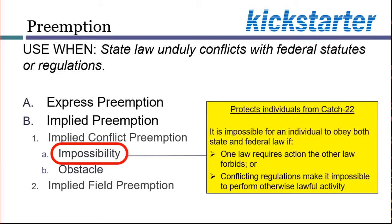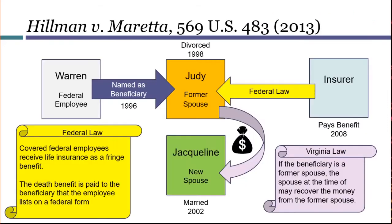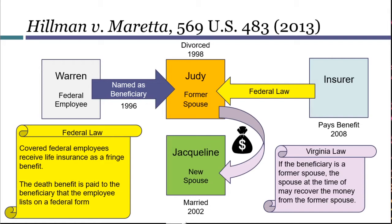Once again, people who obey one law are, by definition, violating the other. In Hillman, let's consider each individual to see whether they are placed in an impossible situation. Start with the insurance company — there's really no impossibility here. The insurer can follow federal law by sending the money to Judy, and it doesn't violate state law when it does this, because the state law says nothing about the insurance company. There's no impossibility for Judy either. Federal law doesn't require her to do anything in particular. Judy will be unhappy if the state law takes the money away from her, but that doesn't mean Judy is being forced to violate federal law when she obeys state law.